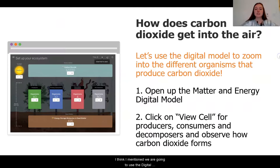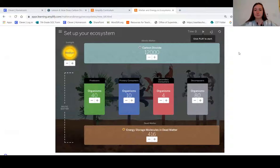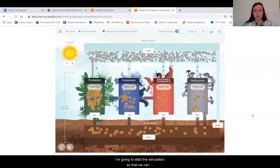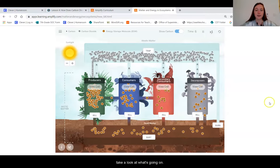As I mentioned, we are going to use the digital model to zoom in a little and really see this process in action. If you have access to the digital model, you can go ahead and pause this video and start exploring yourself. If not, you can follow along with me. All right, so here we are in our matter and energy digital model, and I'm going to start the simulation so that we can take a look at what's going on.